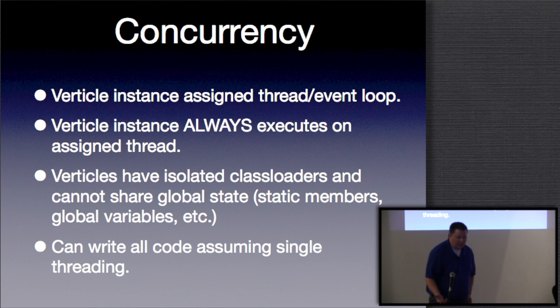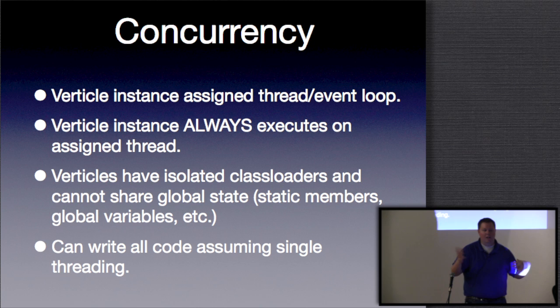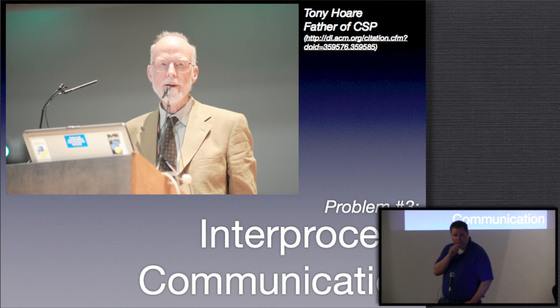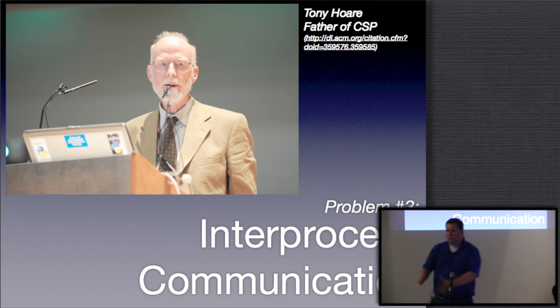Now that we've guaranteed Verticles are isolated, we have a problem — we've got a bunch of isolated processes that can't talk to each other and can't get any useful work done. Node faces the same problem: how do we get Node.js processes to communicate with each other after clustering? How do we get Vert.x Verticles to communicate, given this walled garden where every Verticle is unable to talk to another?